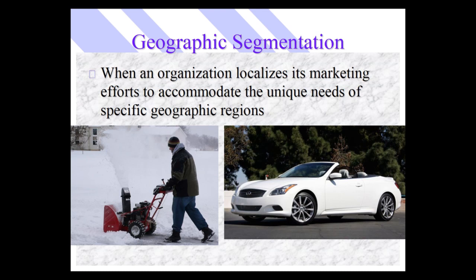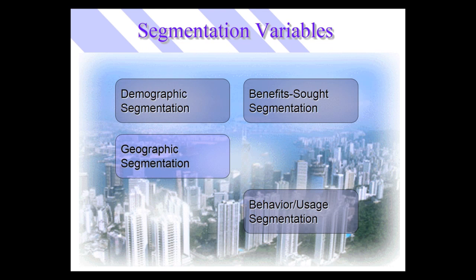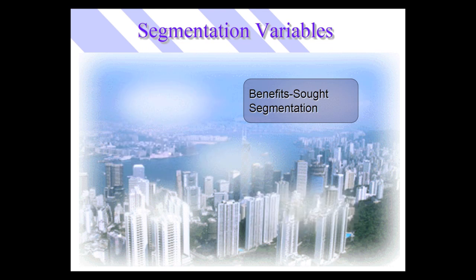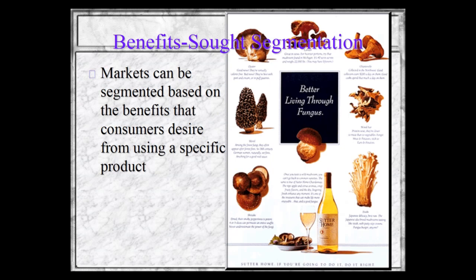But some geographic differences are not quite so obvious. When I lived in Hawaii, one of the amazing things was the incredible popularity of Spam on a per capita basis — so popular they even had a festival in Waikiki called the Spam Jam. Another segmentation variable is benefit segmentation — markets can be segmented based on benefits that consumers desire from using specific products. The beer industry is a good example: Michelob Ultra is for people watching their carbs.